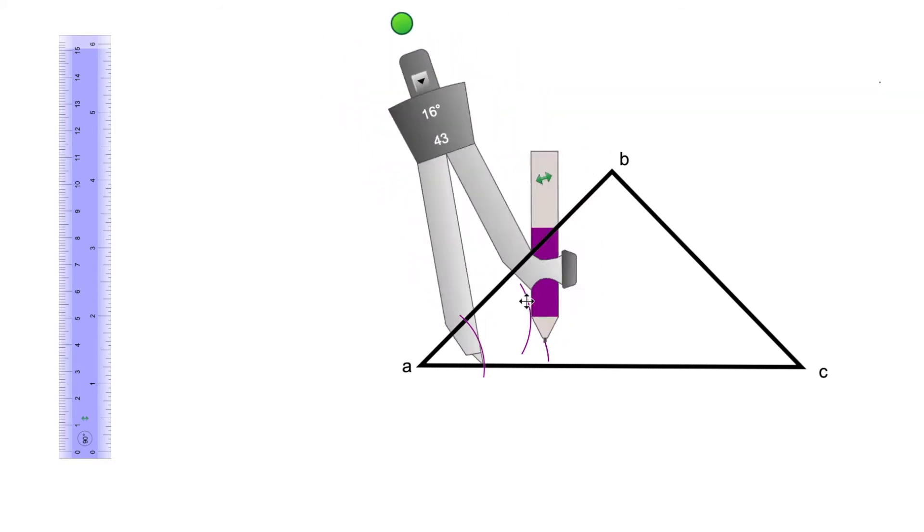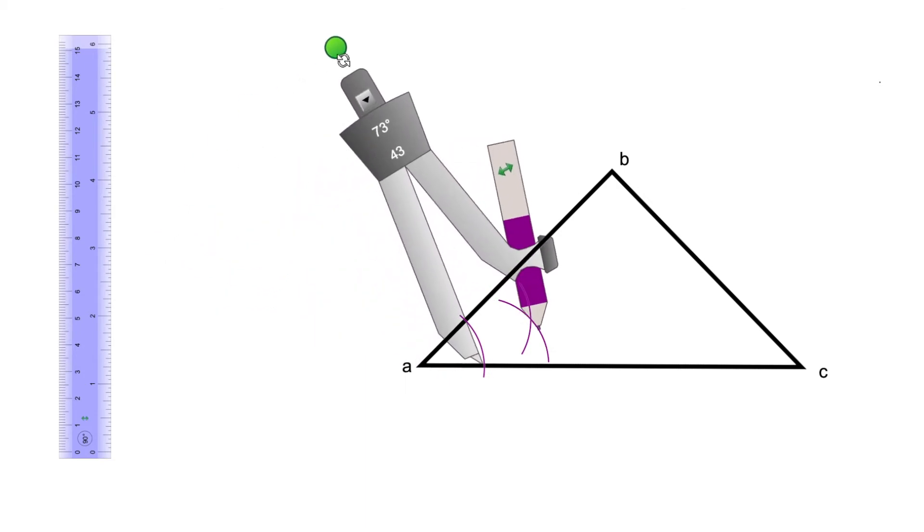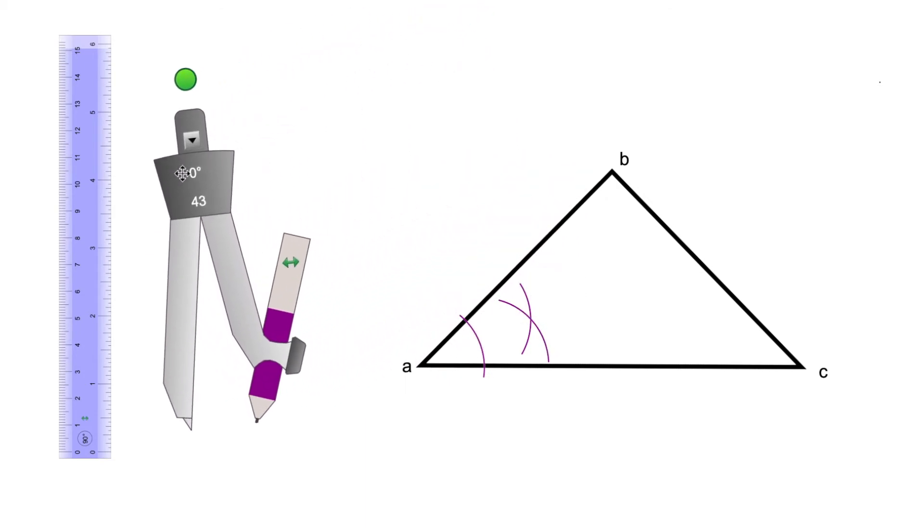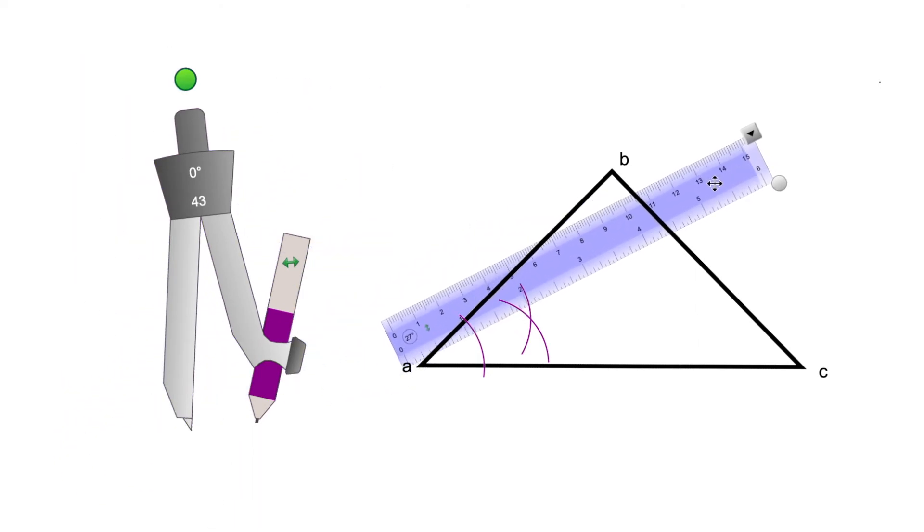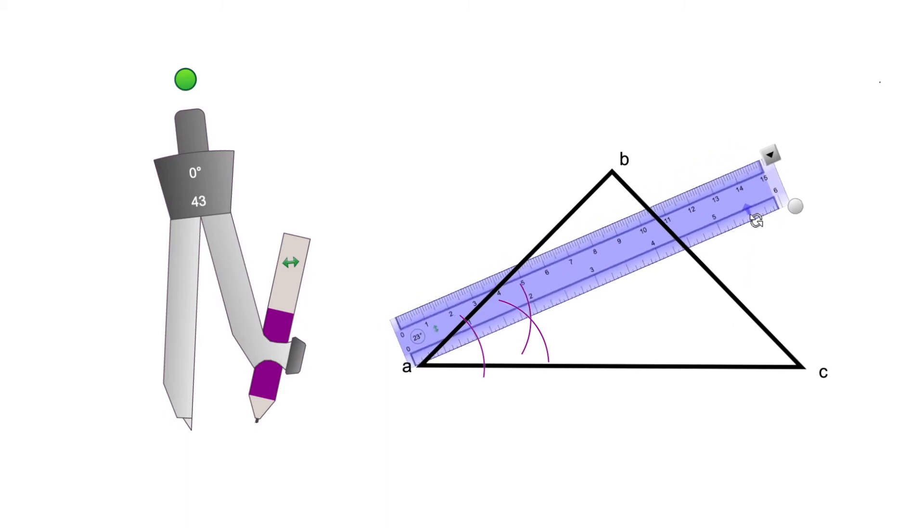Once you have the intersection of those two arcs, get your ruler and draw a line from vertex A to the middle of that intersection. That is the bisector of angle A.